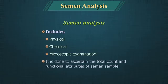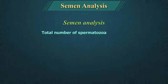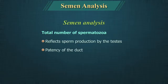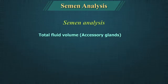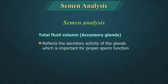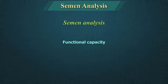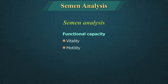Semen analysis is done to ascertain the total count and functional attributes of a semen sample. The total number of spermatozoa reflects sperm production by the testes and the patency of the post-testicular duct system. Total fluid volume reflects the secretory activity of the accessory glands, which is important for proper sperm function. The functional capacity of spermatozoa is assessed by their vitality, motility and morphology.